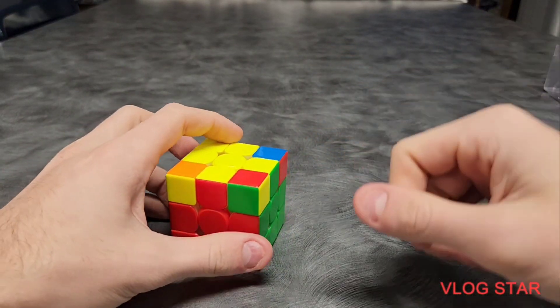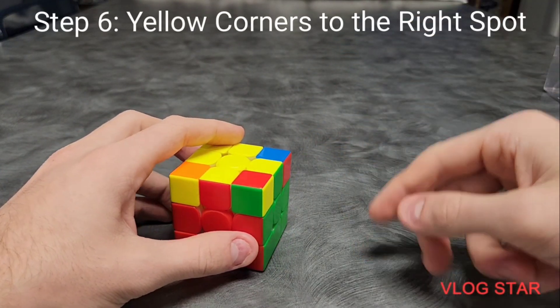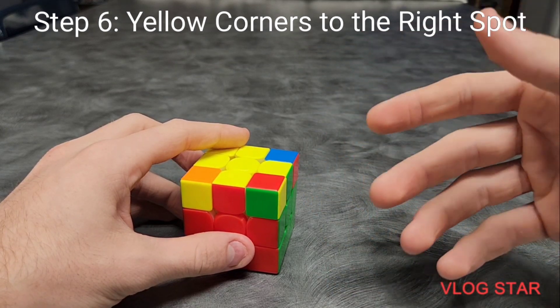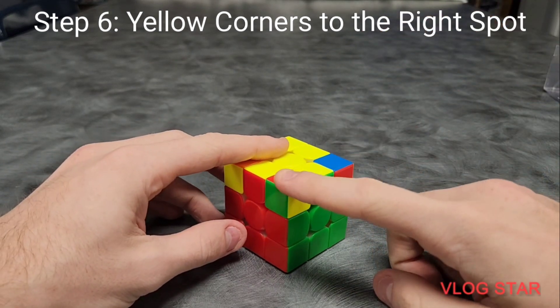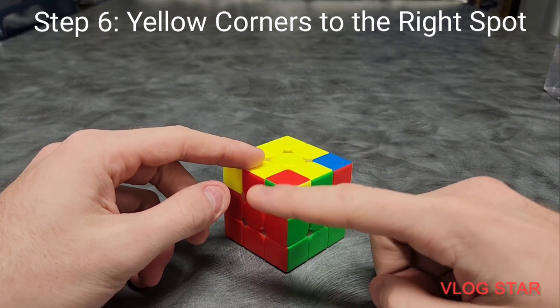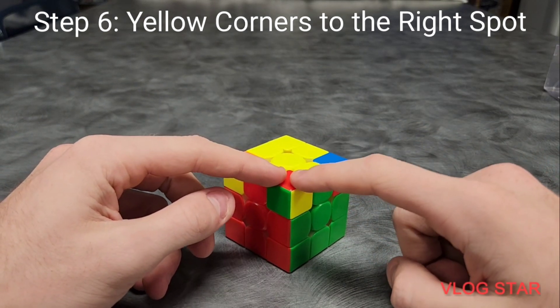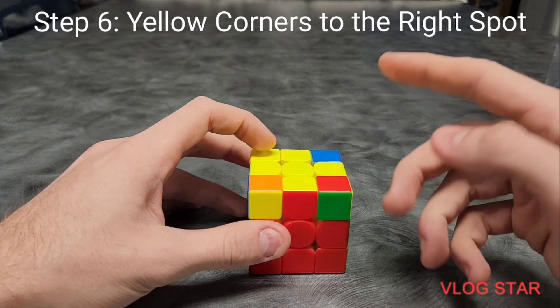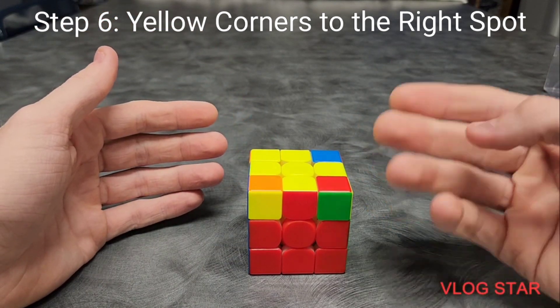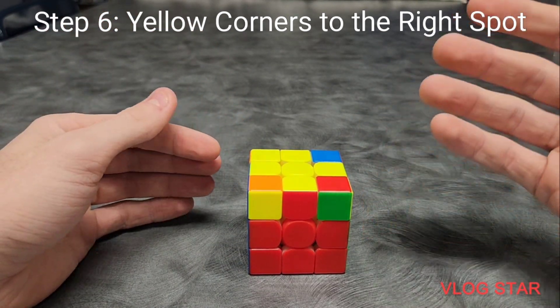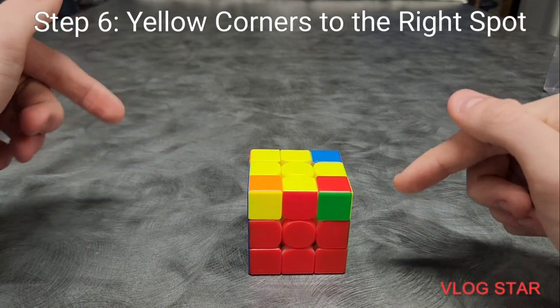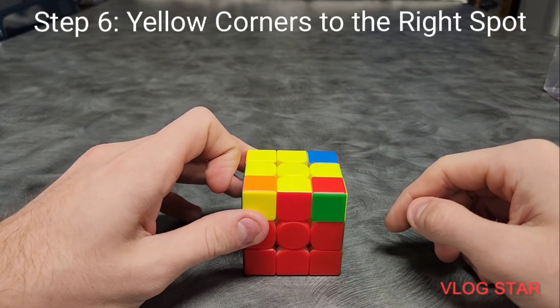There are two more steps left until you've solved this cube. So, you're doing a great job. Now we've got to put the corners in the right spot. That does not mean solved. It just means in between the centers of the colors that the corner has. The weird thing about corners is you're either going to have one, all, or none. If you have none, do what I'm going to say and then do what I'm going to say. Do it again.